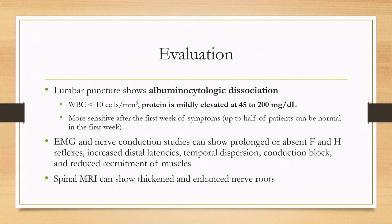EMG and nerve conduction studies can also help, and these will also be more sensitive later in the disease. They will show prolonged or absent F and H reflexes, which can be the first sign. They can also show other hallmarks of demyelination, including increased distal latencies, increased temporal dispersion, conduction block, and reduced recruitment of muscles. The spinal MRI can correspond to the pathology and show thickened and enhanced nerve roots.